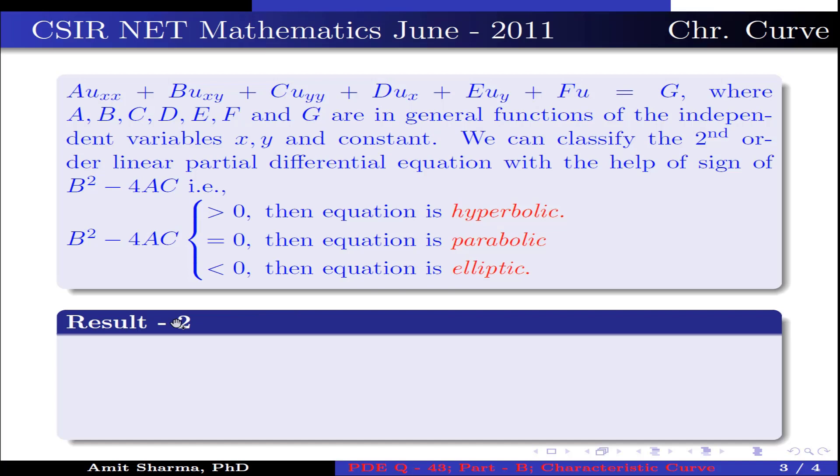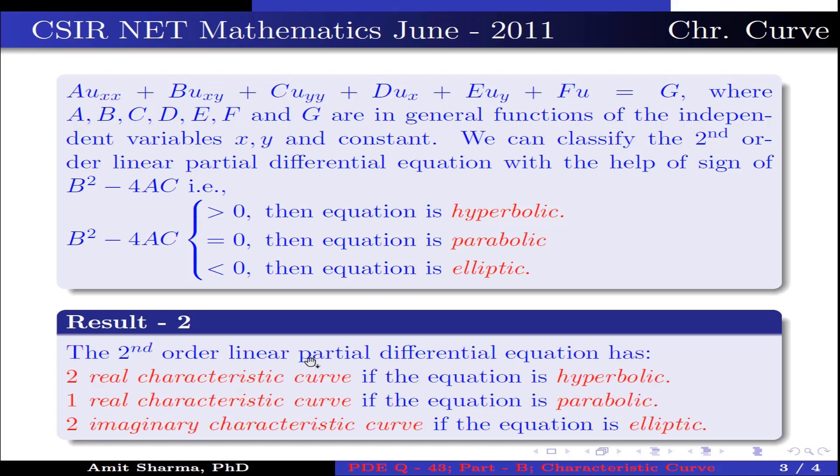Result number 2: The second order linear partial differential equation has 2 real characteristic curves if the equation is hyperbolic, 1 real characteristic curve if the equation is parabolic, 2 imaginary characteristic curves or 0 real characteristic curve if the equation is elliptic.